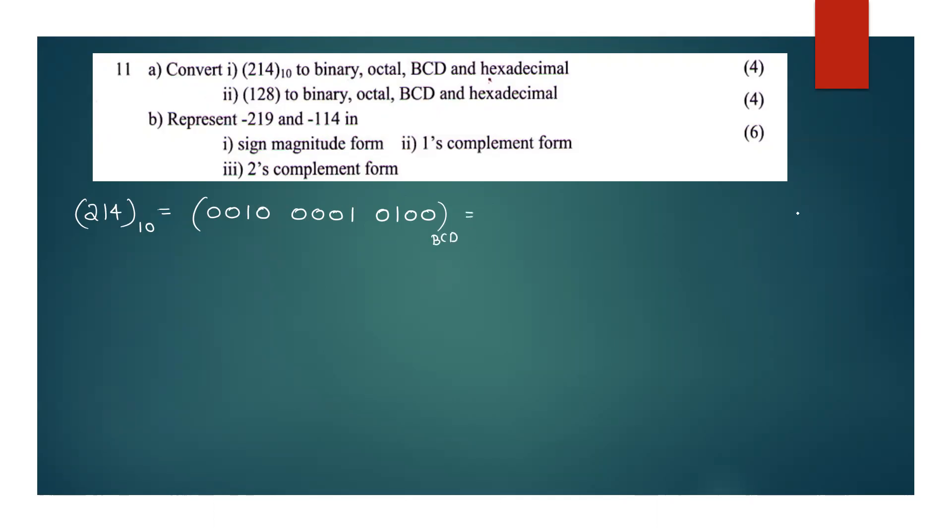Next, you can convert binary. Successive division. 214 divided by 2 is 107. Remainder 0. 107 divided by 2 is 53. Remainder 1. 53 divided by 2 is 26. Remainder 1. 26 divided by 2 is 13. Remainder 0. 13 divided by 2 is 6. Remainder 1. 6 divided by 2 is 3.